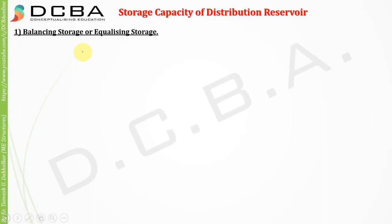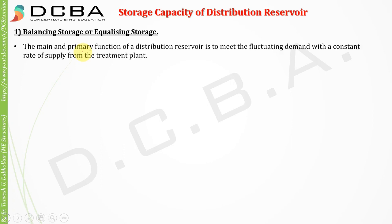Starting with balancing storage, also called equalizing storage. The main and primary function of a distribution reservoir is to meet the fluctuating demand with a constant rate of supply from the treatment plant. As I told you in the previous lecture, demand is not constant throughout the day. From 6 AM to around 10 AM the demand is very high because bathing and other activities happen during that time. But during the night when we are sleeping, the demand is very less. In the afternoons too the demand is not much.